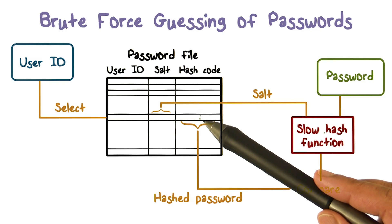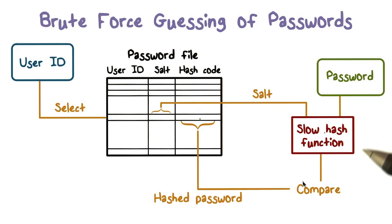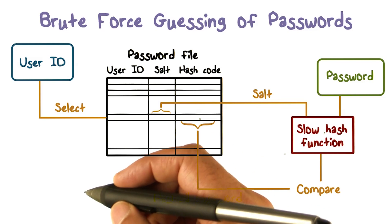The result is compared with the stored hash value. If the two match, then authentication is successful. If they don't match, then authentication fails. This is what happens when we make use of salt — it deals with different users picking the same password and as a result having the same hash value, which would be a problem. When you add salt, think about what would happen to a rainbow table based attack.